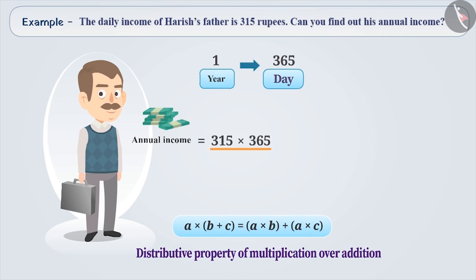That is, 315 into 365 can be written as 315 into (300 plus 60 plus 5). Here, how do we apply the distributive property of multiplication over addition? Think for a while.